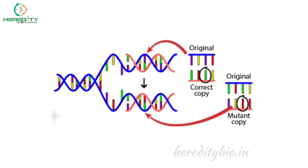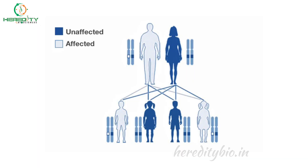While both genetic and hereditary diseases are determined by mutations in our DNA, not all genetic diseases are transmitted down family lines. Only those that are transmitted from generation to generation are hereditary. Now we will focus on the differences between genetic and hereditary disease.